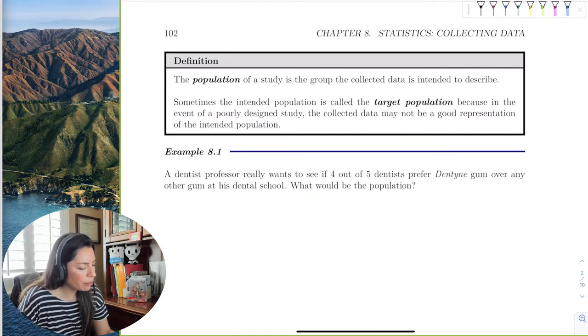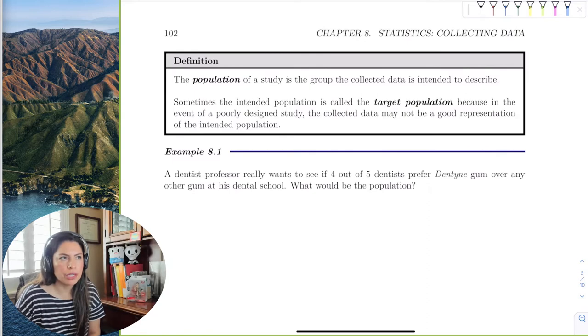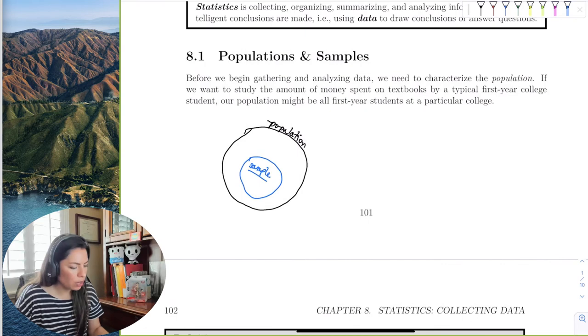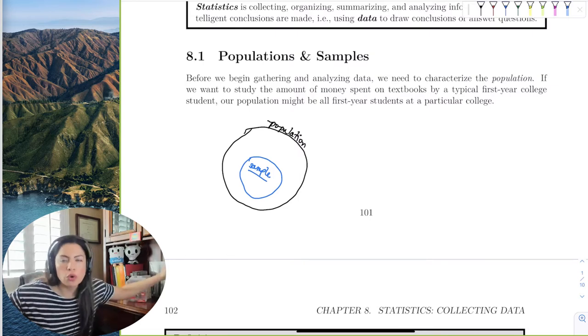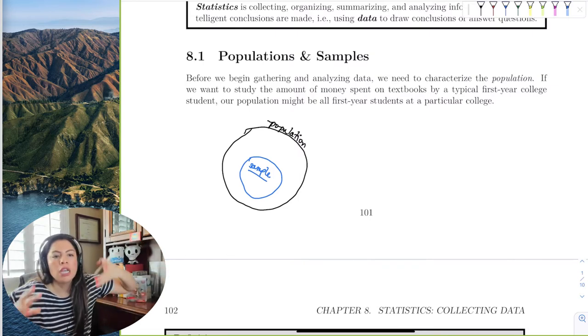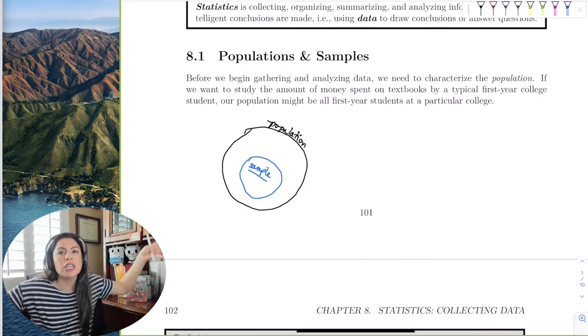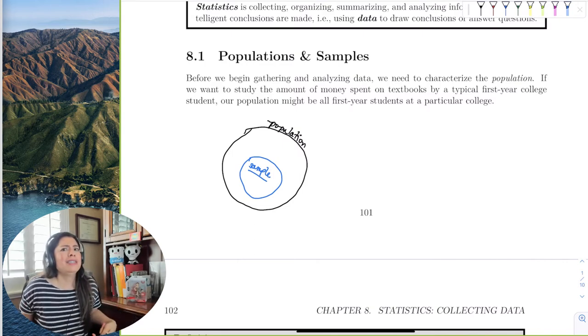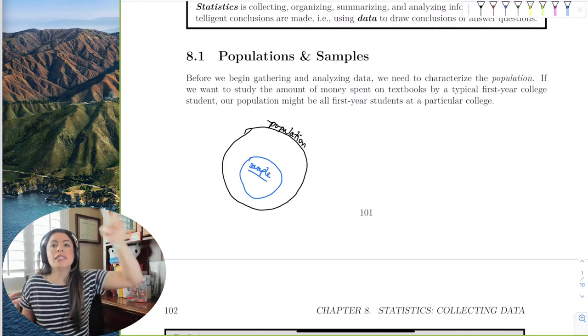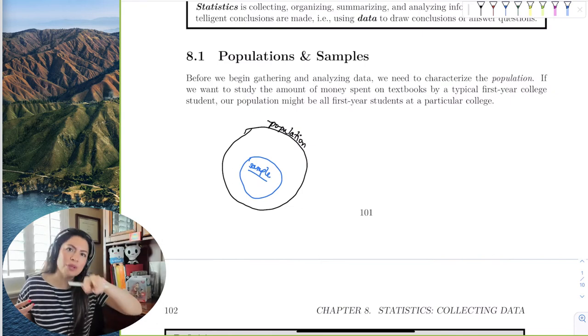There's an example up here. If we want to study the amount of money spent on textbooks by a typical first-year college student, our population might be all first-year students at a particular college. If you're at UCLA, that population is way too large and way too time-consuming and would cost a lot just to sit there at the bookstore and survey how much you spent. But it would be timely if we could take a sample of those, maybe different days, different times, different student ages.